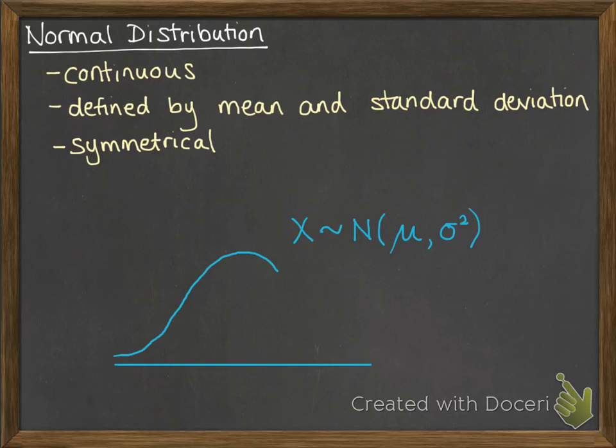It's symmetrical, so if we drew it, it would look like this, where μ is that central value there, and everything is distributed around the mean. And we call that a bell-shaped curve.